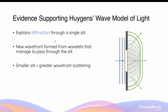Besides reflection and refraction, Huygens' wave model of light also explains the phenomenon of diffraction. Diffraction refers to the scattering of light when it passes through a small opening. Huygens explained that this is due to only some of the wavelets being able to pass through the small opening. As a result, the new wavefronts after the wavelets have passed through will scatter and propagate outwards. The new wavefronts are no longer completely longitudinal and linear, because some of the wavelets that formed the original wavefronts were not able to pass through. If the opening is smaller, then fewer wavelets will be able to pass through, resulting in a wavefront that appears to scatter or diffract more.